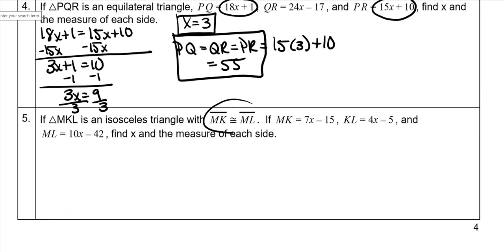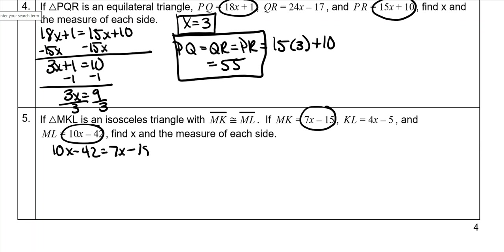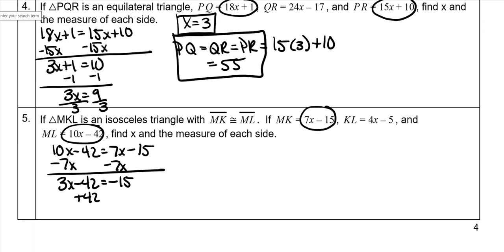This one's an isosceles, and it tells you specifically MK is congruent to ML. So I have to use those two sides — I cannot use the other one. Those two are the ones equal to each other. So 10x minus 42 is equal to 7x minus 15. Subtract 7x from both sides, then add 42 to both sides — that gives 27. Divide both sides by 3, and x is 9.